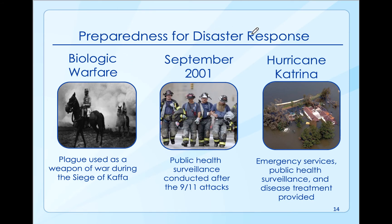Biological warfare and preparing for disaster responses is part of public health. In biological warfare, people are worried about bioterrorism — for example, releasing a pathogen that could make people sick purposefully. September 11, 2001 is an example of a man-made disaster, as is Hurricane Katrina. Always being prepared for emergency disasters is an example of the importance of having an emergency response plan.